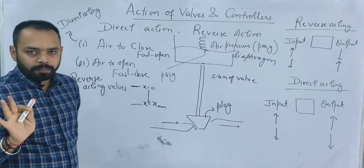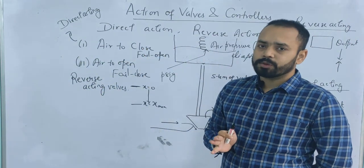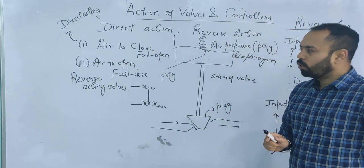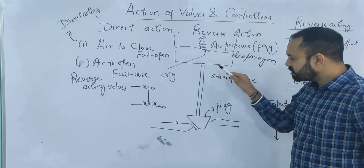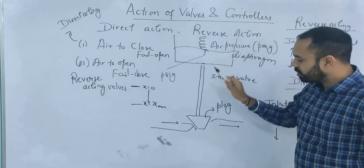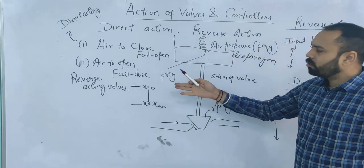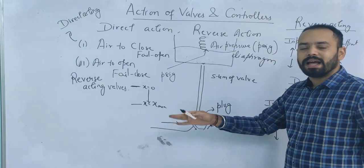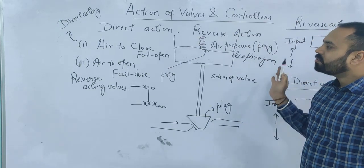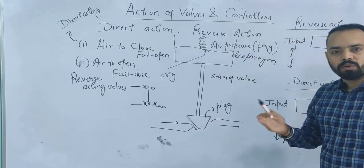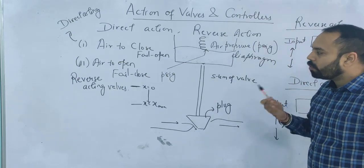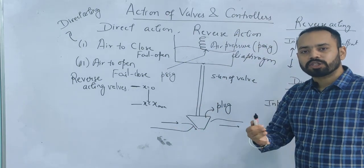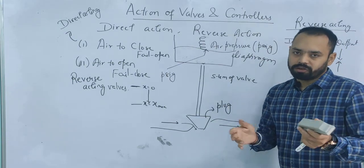This concept is not explained in most books, but there are questions in GATE examinations based on it. The action of the valve is calculated on the basis of air pressure and stem movement — not on the basis of air pressure and flow rate. In the air-to-close valve, increasing air pressure does decrease flow rate, but this is not the basis for defining the action of the valve. So: air-to-close is always direct acting, and air-to-open is always reverse acting.